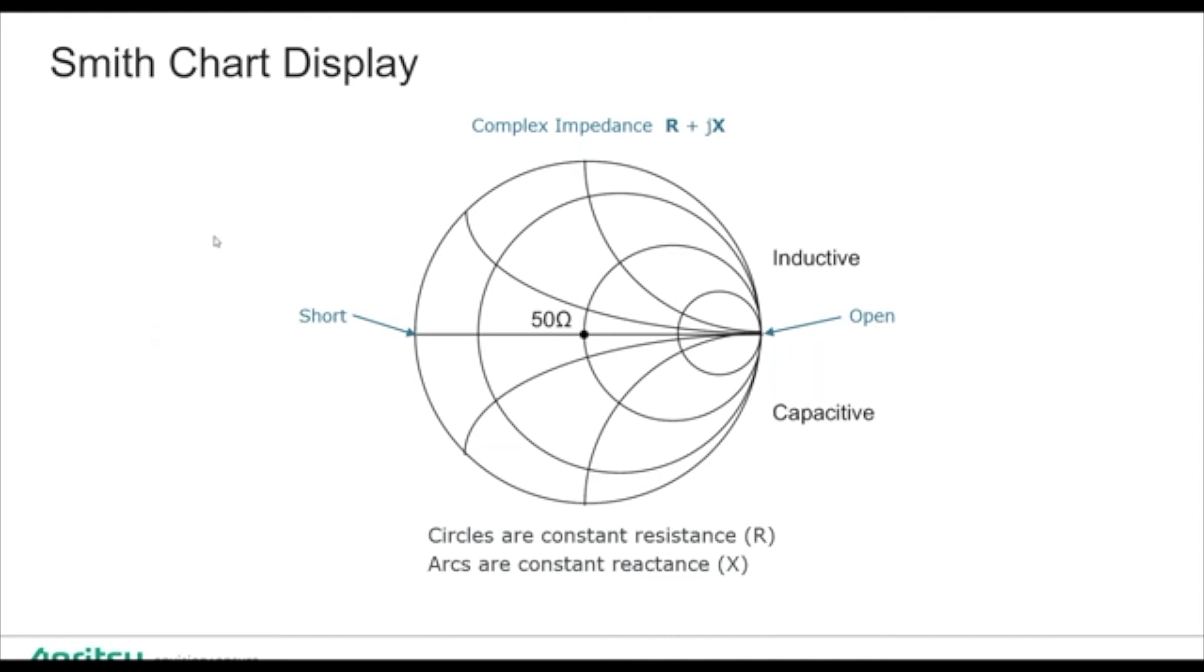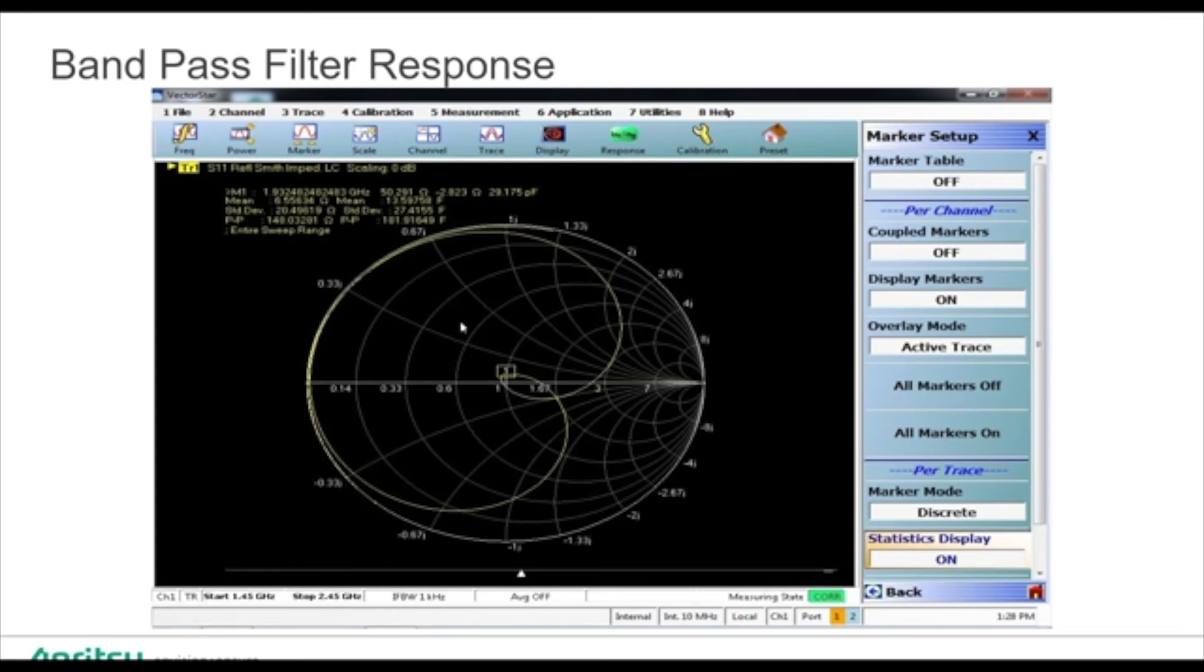This is a Smith chart display, and I just put it in here to remind us that when you're above the Smith chart, it's inductive response, and when we're below it, it's capacitive. Of course, we want to design a filter so that our pass band is close to the center of the Smith chart as possible, and that's what we see in this band-pass filter's response. The area of interest is very close to a perfect match right here.